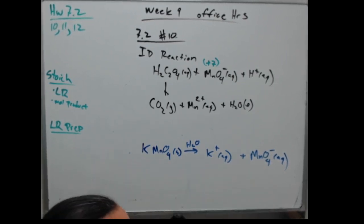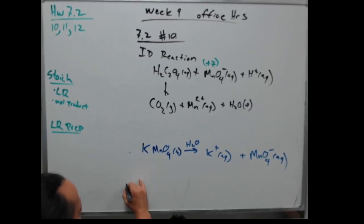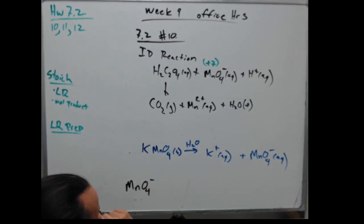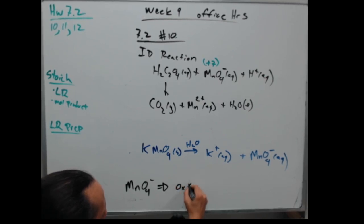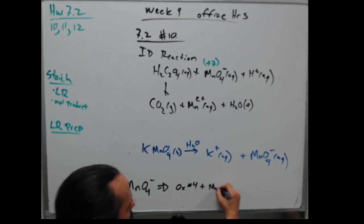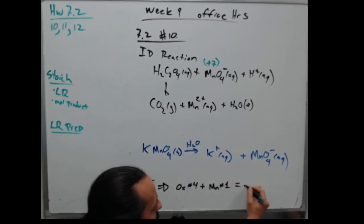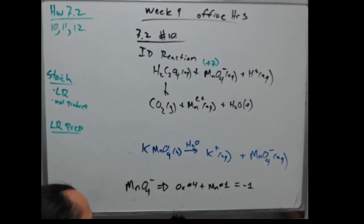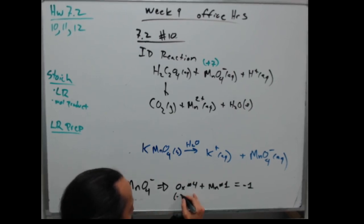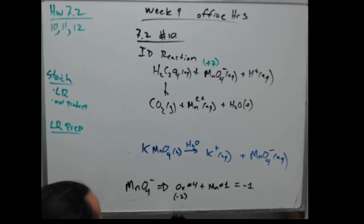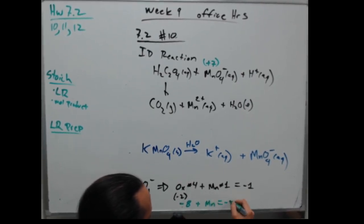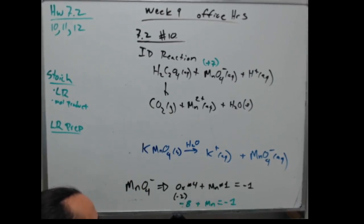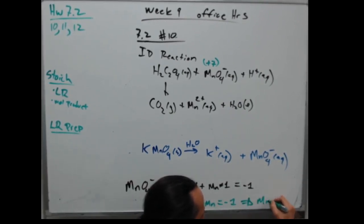For the permanganate ion, the oxidation state of oxygen times 4 plus the oxidation state of manganese times 1 has to add up to −1. Oxygen is −2, so that gives minus 8 plus manganese equals −1. Solving, manganese is +7. You can practice doing this in your head: +7 minus 8 gives −1.